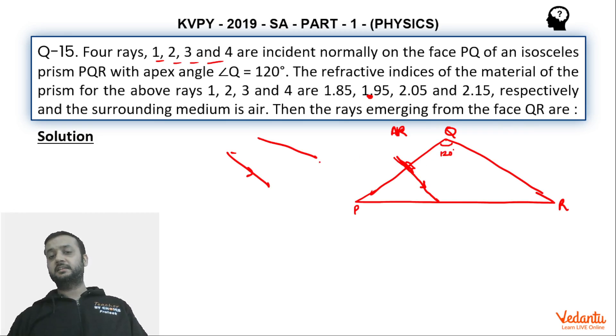Hence, we can say that these two lines will be going away from each other. Hence, these two lines cannot intersect this side. These two lines will intersect somewhere over here. So that means this ray is 90, this angle is also 90. So this angle is 30. And this is 60 so this is 30.